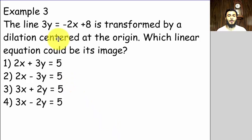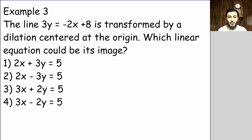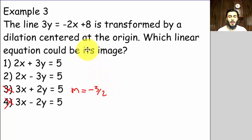Last example: the line 3y = −2x + 8 is transformed by a dilation centered at the origin — which linear equation could be its image? We know that when a line is dilated, the slope remains the same. So the answer cannot be choice three or choice four, because choice three gives a slope of −3/2 and choice four gives a slope of 3/2.